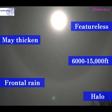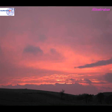Alto stratus cloud is easier to identify once a halo forms around the moon or the sun. The direction from which that halo breaks generally is the direction from which the cloud is coming. However, alto stratus cloud needn't be associated with rain — it may just be associated with a patch of instability in the medium levels of the atmosphere. It can also produce some spectacular sunset effects.